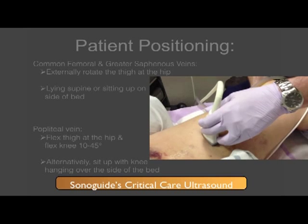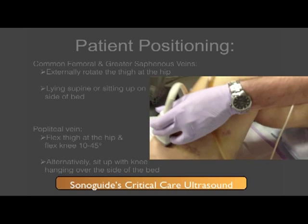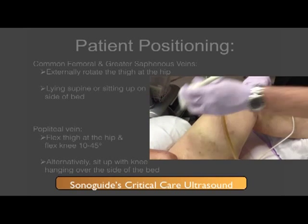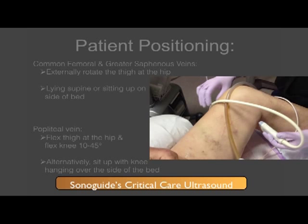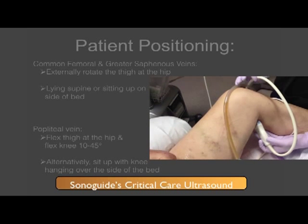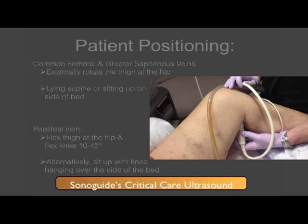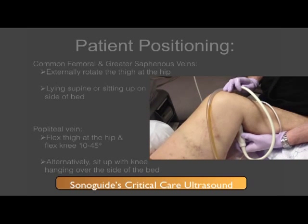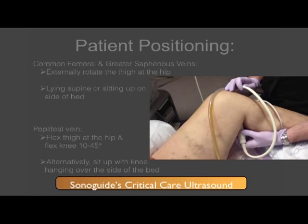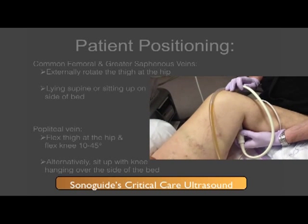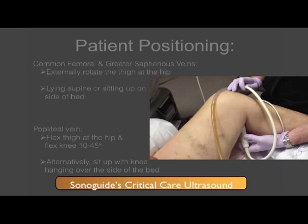Just like any other procedure or skill, it is important to properly position the patient. For the common femoral and greater saphenous veins, it is helpful to externally rotate the patient's thigh at the hip. This can be done with them lying supine or sitting up over the side of the bed.